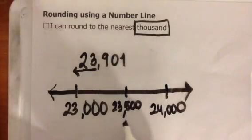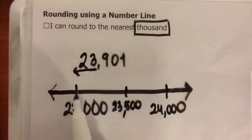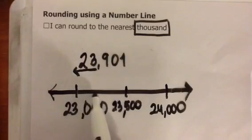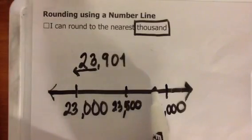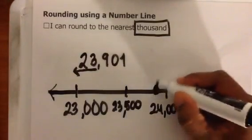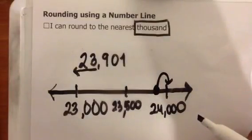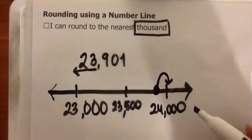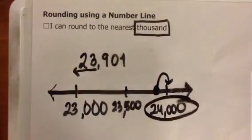I simply need to plot my number, 23,901, on this number line — about right here. And I can see that 23,901 to the nearest thousand is 24,000.